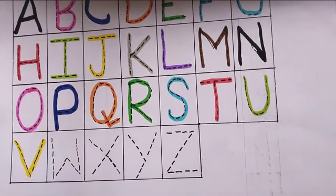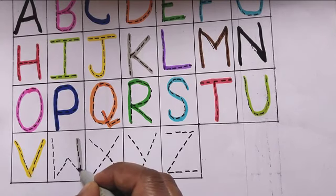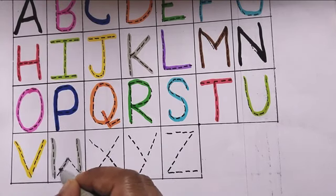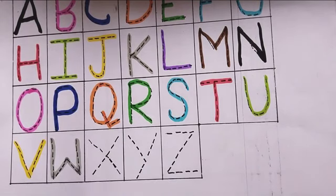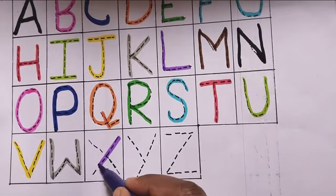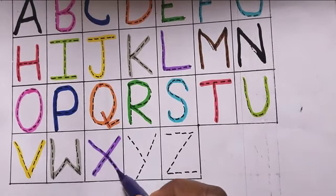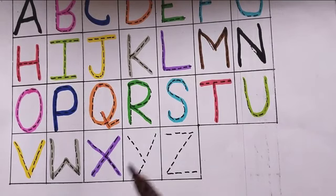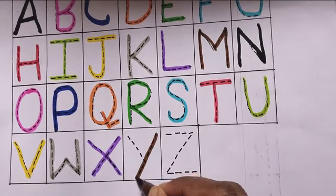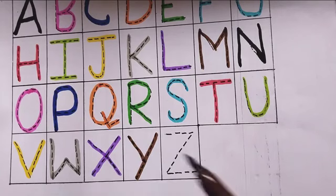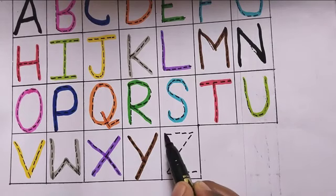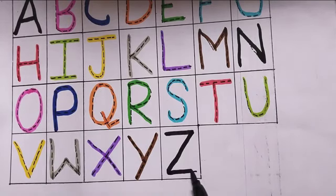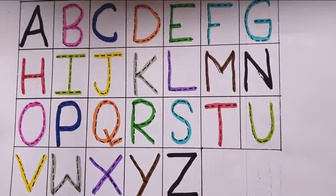V, V for violet. W, W for watch. X, X for x-ray. Y, Y for yellow. Z, Z for zebra. Okay, thank you, bye friends.